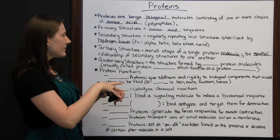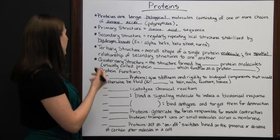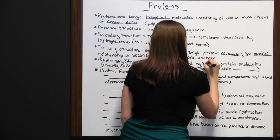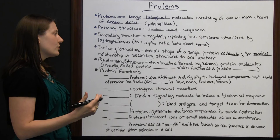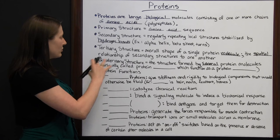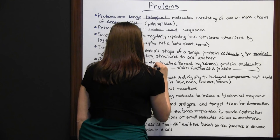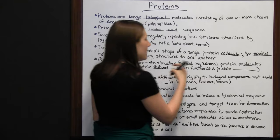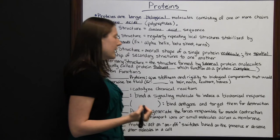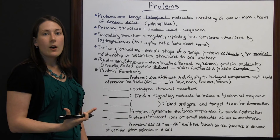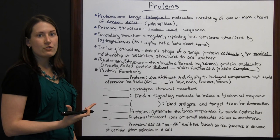The quaternary structure is formed by several protein molecules joined together, usually called a protein subunit, which functions as a protein complex. It's more complex and able to process more complex functions. A lot of the time, you'll see quaternary structures because proteins are drawn toward each other and bond.